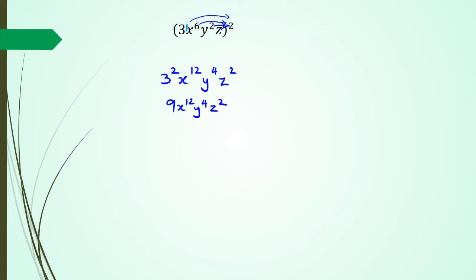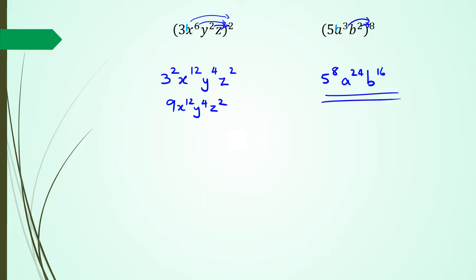Simplifying, the answer is 9x to the power of 12, y to the power of 4, and z squared. Now for one more example: (5a³b²) to the power of 8. Without a calculator, 5 to the power of 8 would take a long time, so I'll leave the answer with base 5. Since 5 has a power of 1, we get 5 to the power of 8, then 3 times 8 is 24 so a to the power of 24, and 2 times 8 is 16 so b to the power of 16.